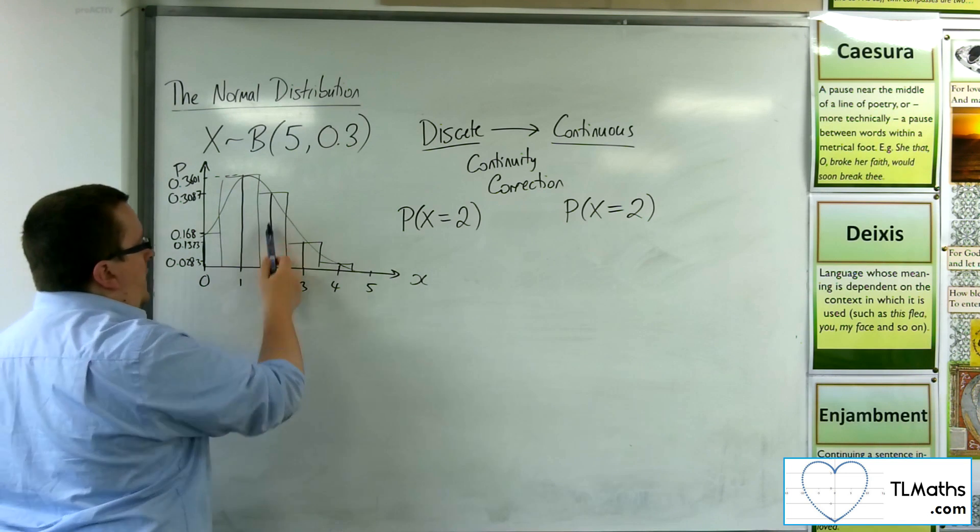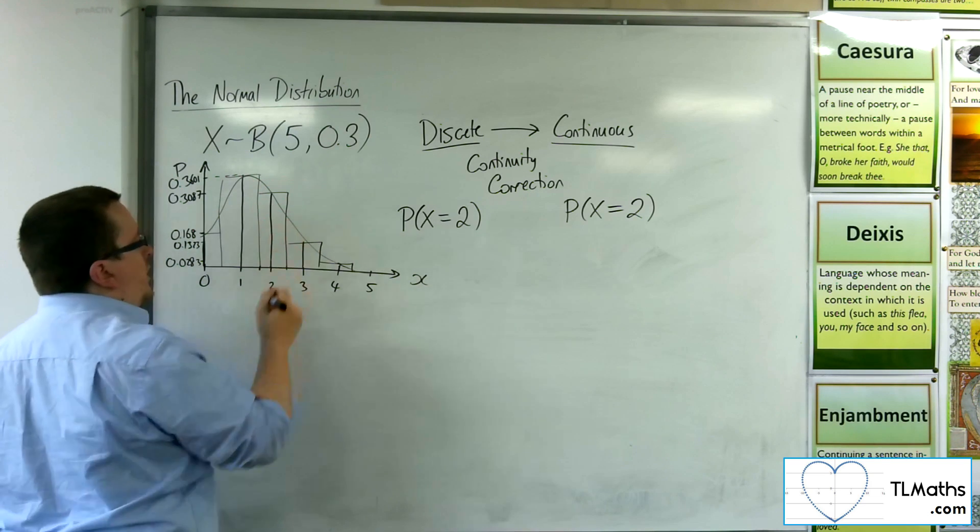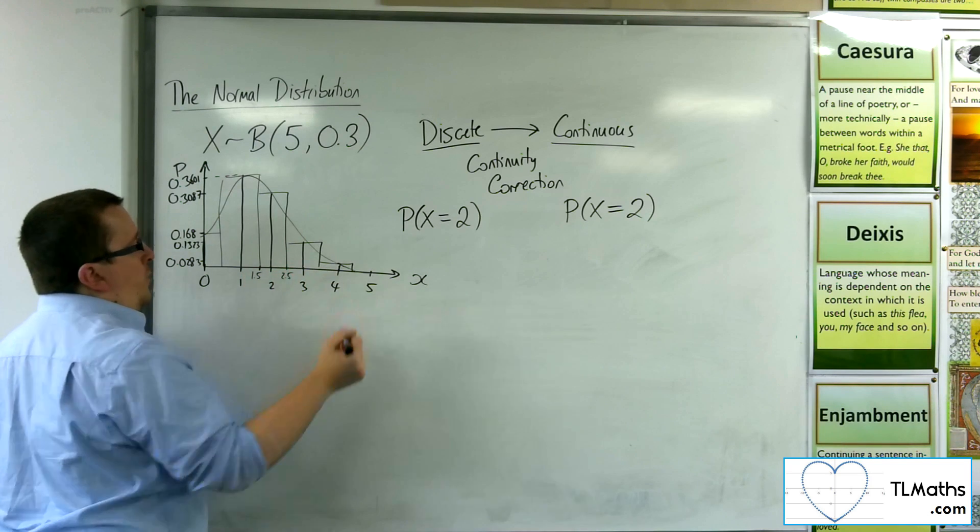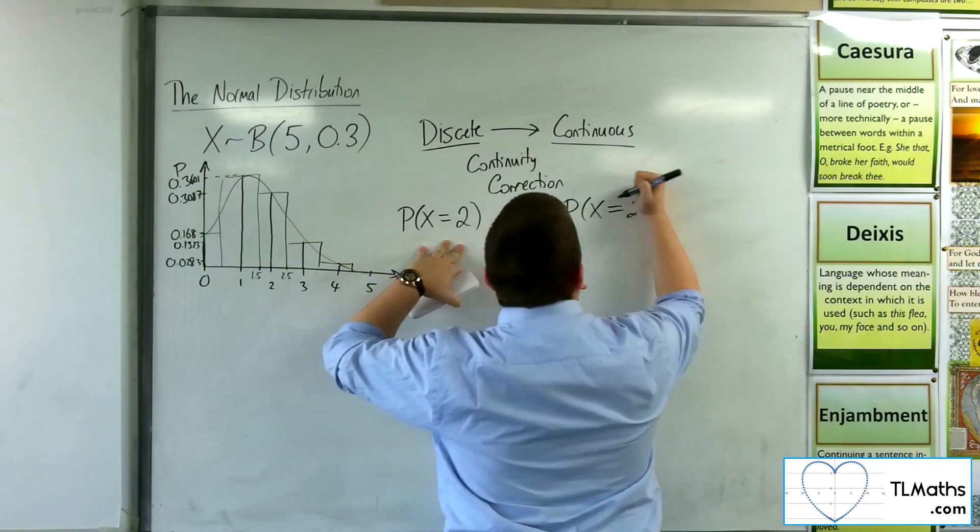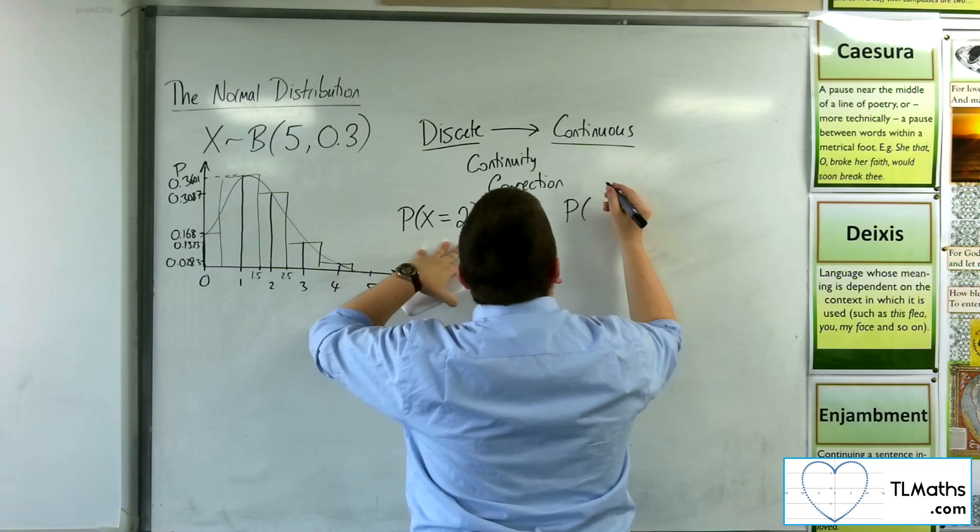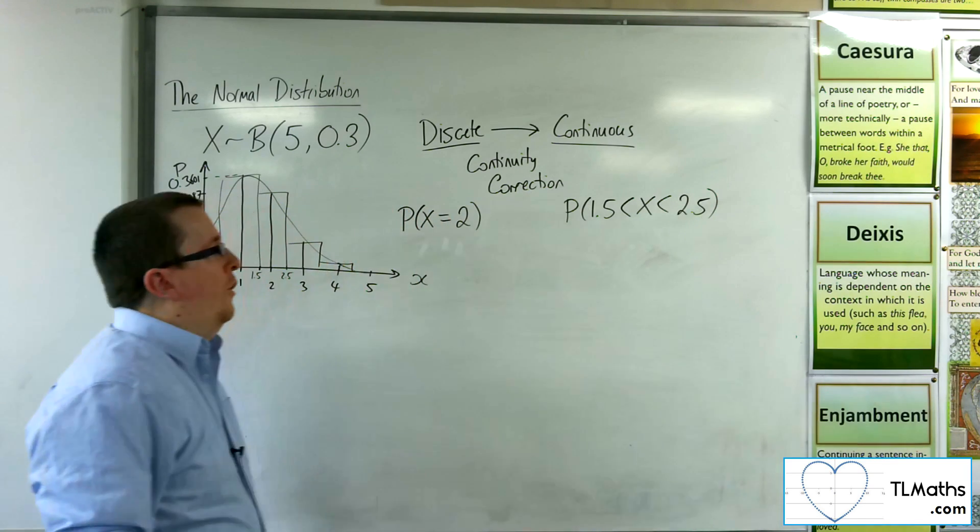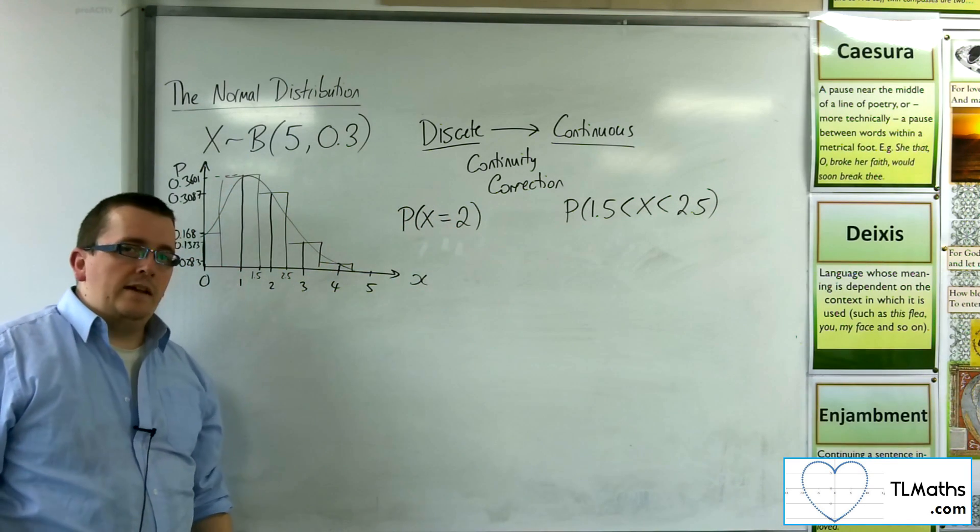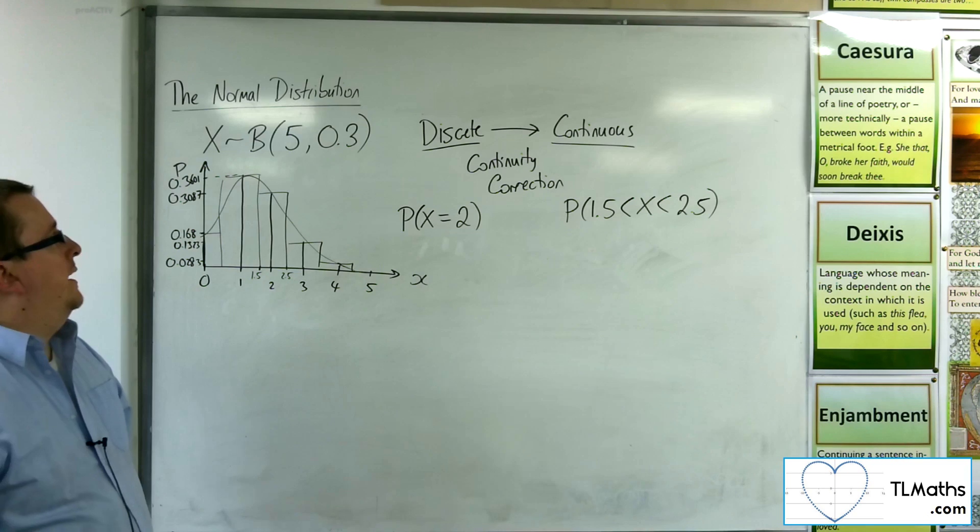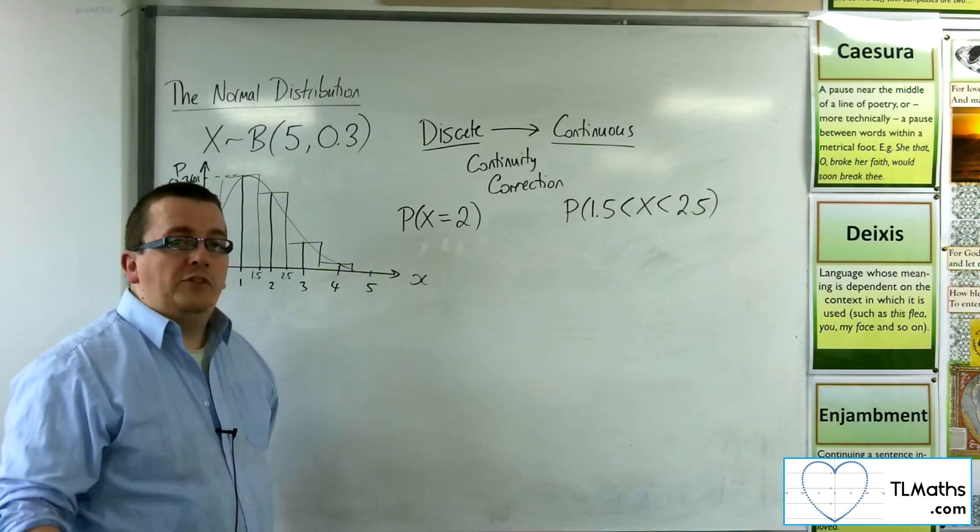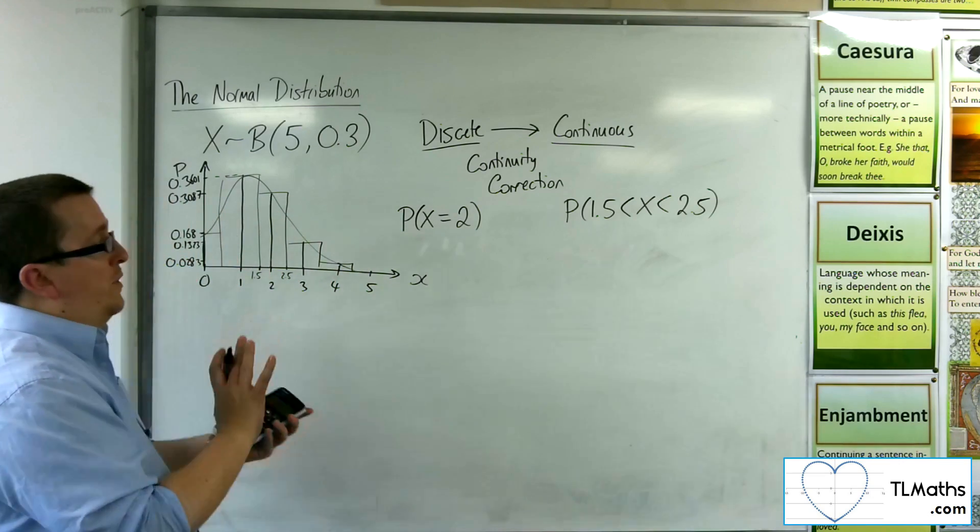So how are we going to deal with that? Well, in our bar here, the x equals 2 could be represented by that whole bar going around it. So from 1.5 up to 2.5. So when we convert from x equals 2 to the continuity correction to continuous, I'll actually be wanting to find the probability 0.5 either side of the 2 that I have there. So what we're going to be doing is going through that process to get there.